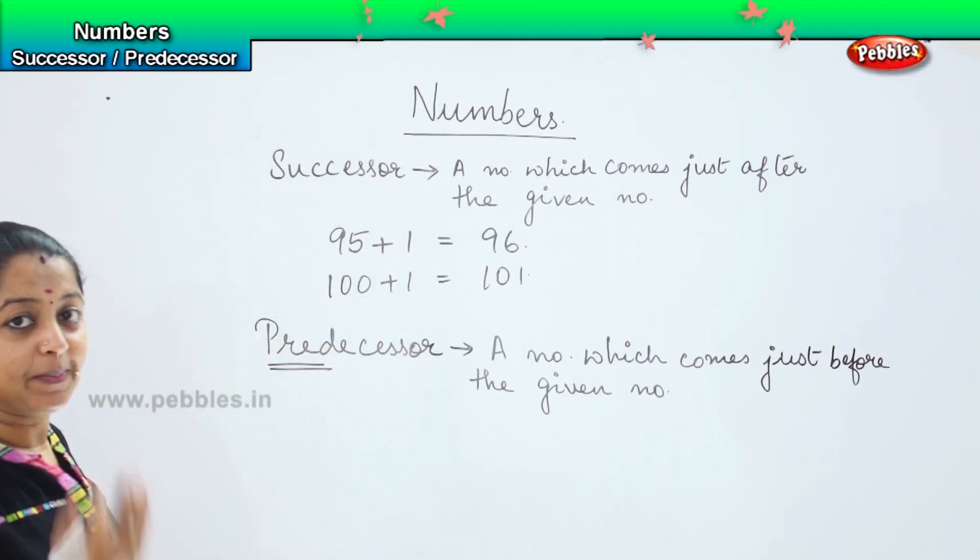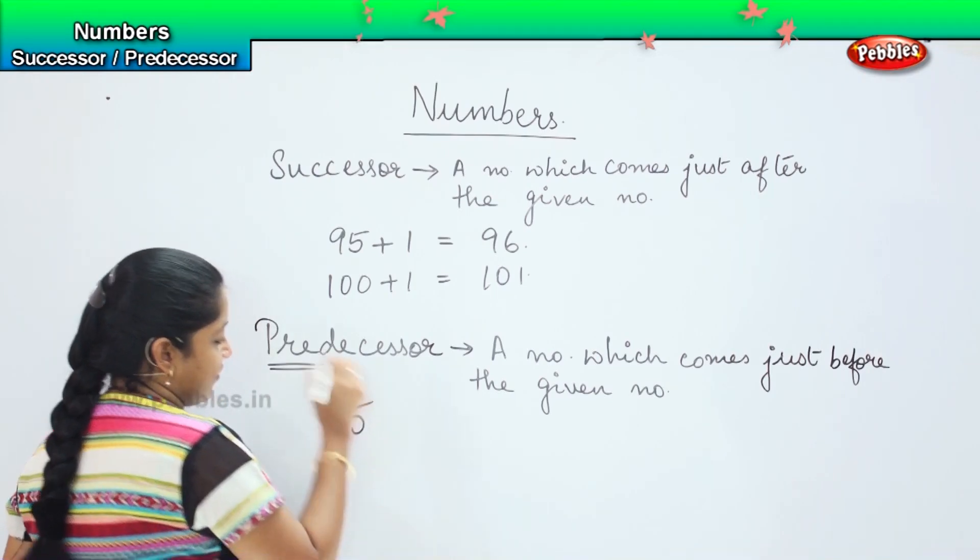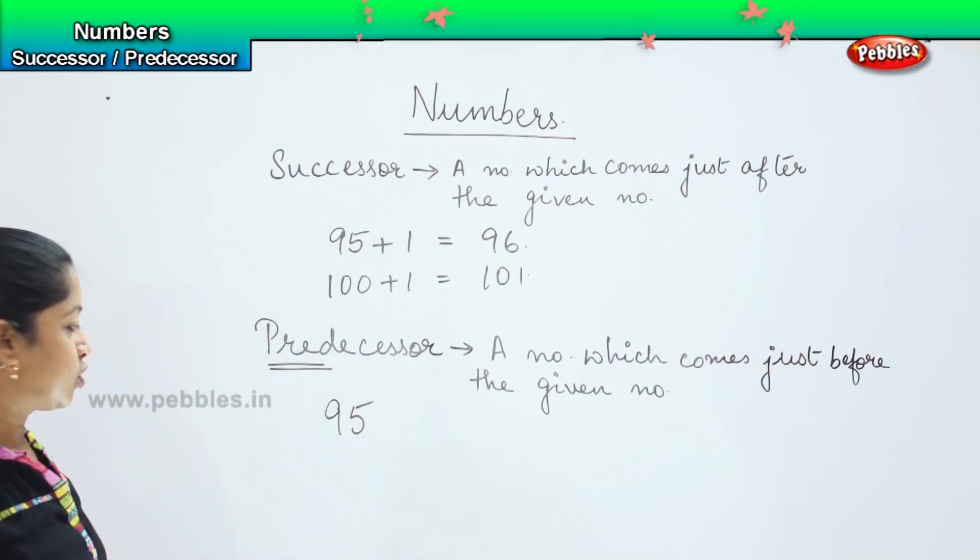Just before, which means immediately before the given number. Similarly, say the same example we take 95, okay? So what is the number which comes just before 95?